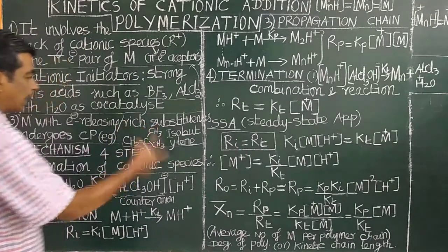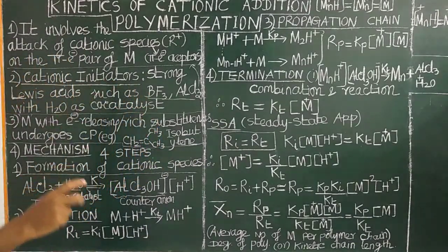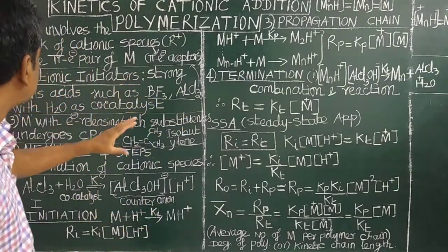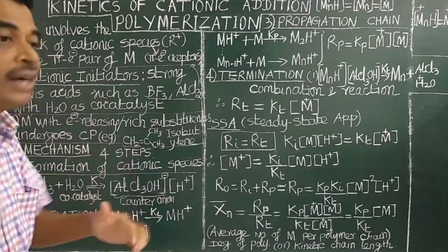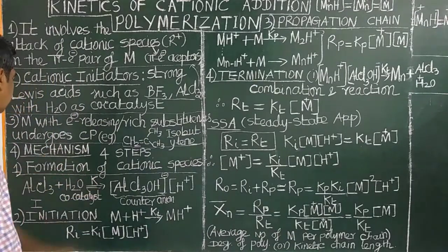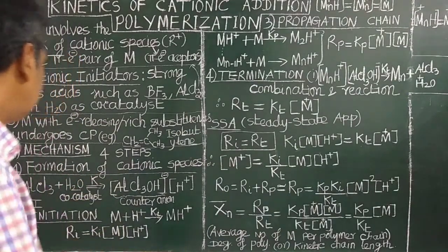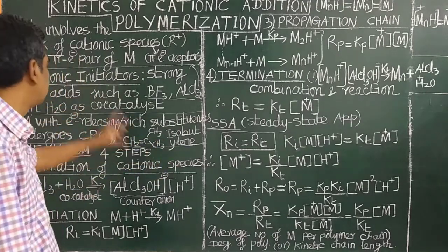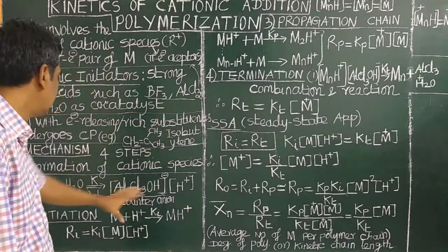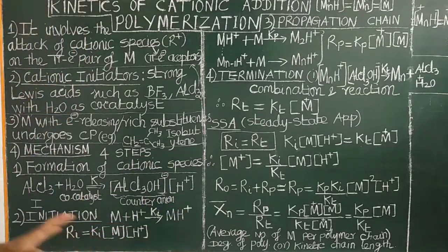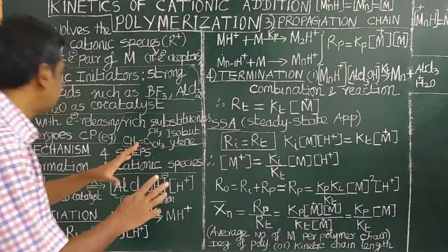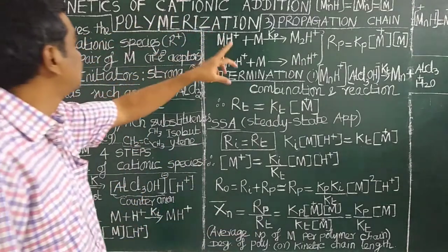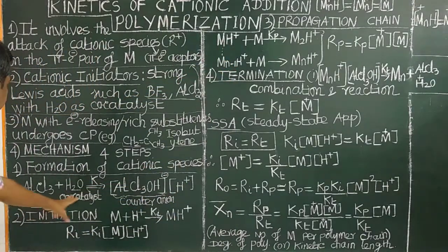If the monomer has electron-withdrawing groups such as CN or acetonitrile, it cannot undergo cationic addition polymerization, because electron-withdrawing groups prevent attack by the cationic species. The mechanism includes four steps: formation of cationic species from the cationic initiator (e.g., AlCl3), plus the usual three steps. The cationic species that initiates the polymerization is formed from the Lewis acid initiator.